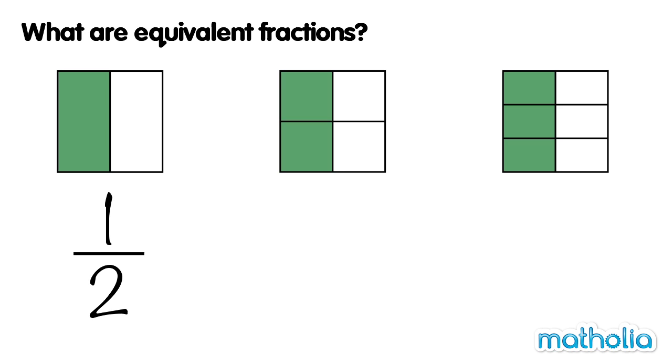In the second square, there are four equal parts. Two parts are coloured. Two quarters of the square is coloured.